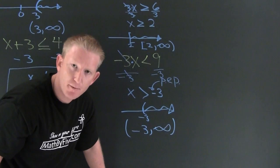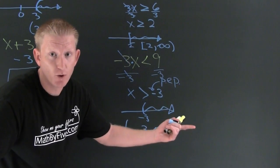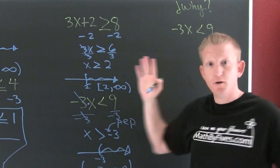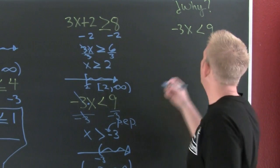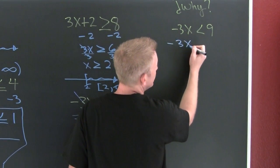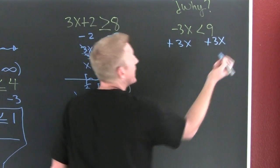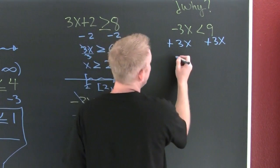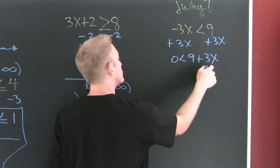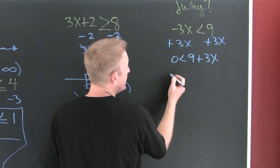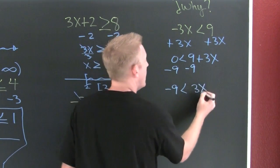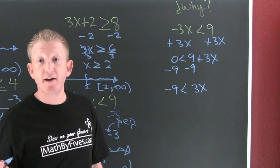You probably want to know why we flip the sign when dividing by a negative. Here's why: instead of dividing by negative three, I'll add 3x to each side using the additive property, which always works. Then I have zero is smaller than 9 plus 3x. Subtract the 9 from both sides, giving negative 9 is smaller than 3x.